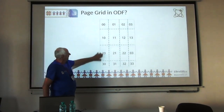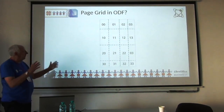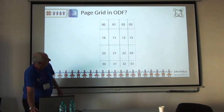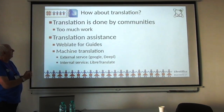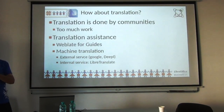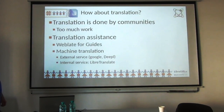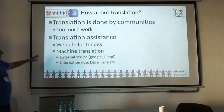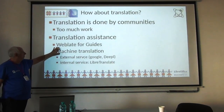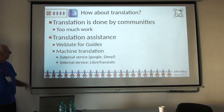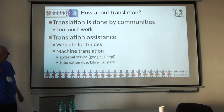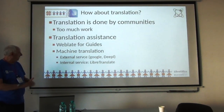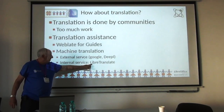I could have grids to divide my page tiles in several ways and then attribute sections to them. Translation is done by communities — it's a lot of work, everybody knows that, it takes a lot of time to translate. I would like to have translation assistance. We started to use Weblate for guides to evaluate how effective it is, and machine translation is something I would like very much to consider, either using an external service or an internal service with a project named LibreTranslate.